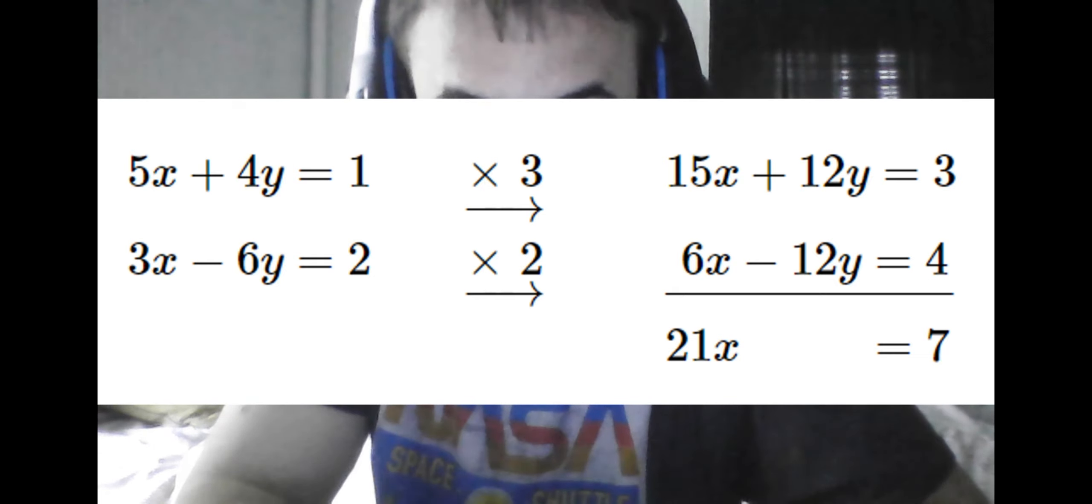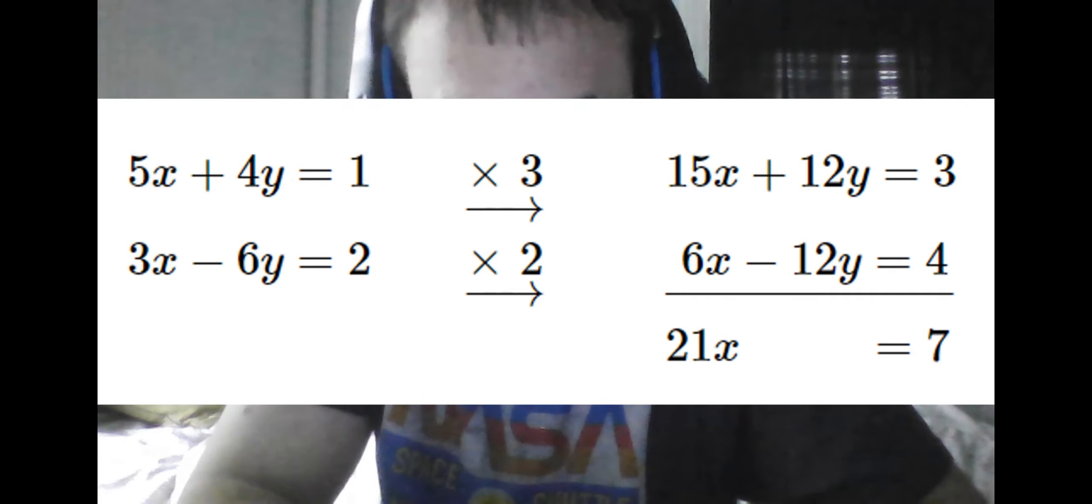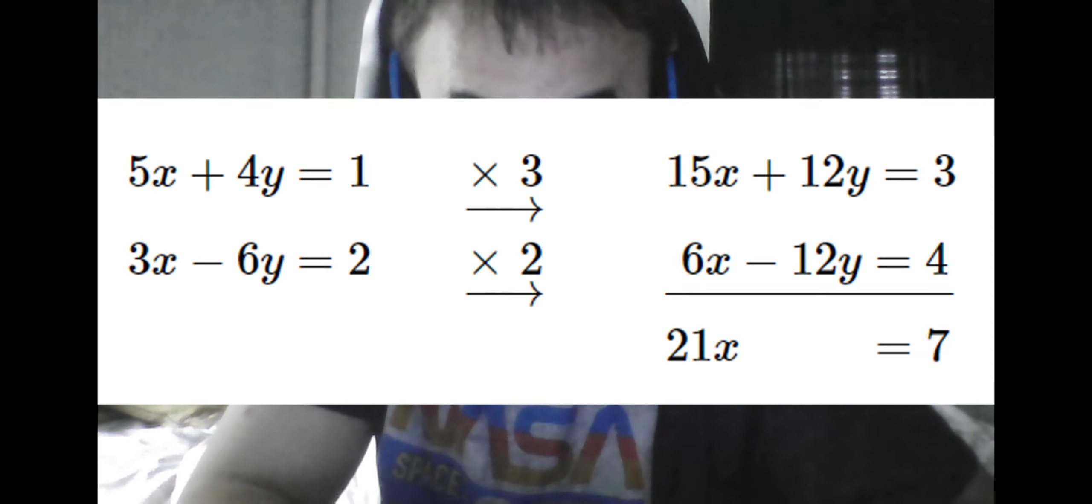So now we can solve for y by plugging in x into one of the equations. And seeing that, this condenses to a linear equation in terms of y. Once we do all of the steps for solving a linear equation, we get y equals negative one sixth. And this will actually work for the other linear equation too. Which you can confirm yourself by plugging in x equals one third in that equation, and solving for y.